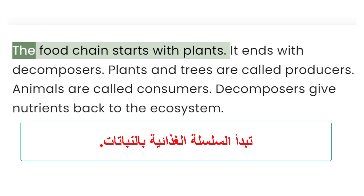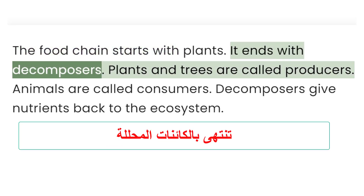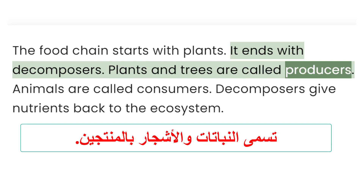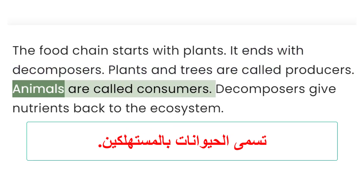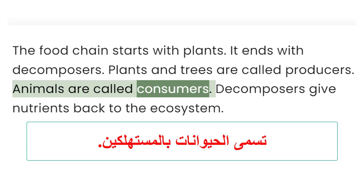The food chain starts with plants. It ends with decomposers. Plants and trees are called producers. Animals are called consumers.